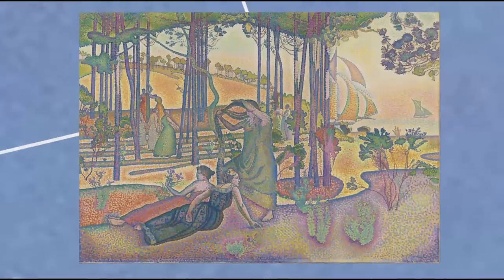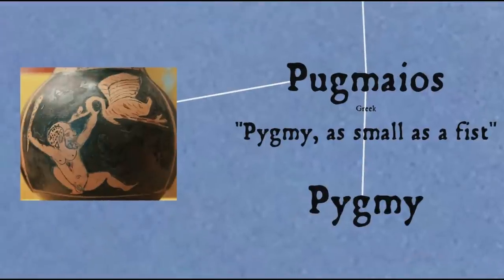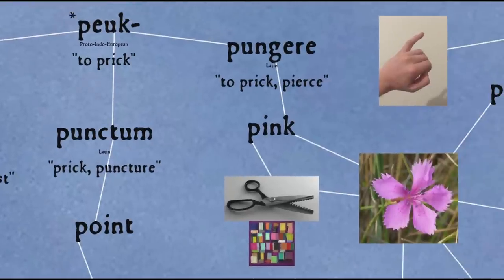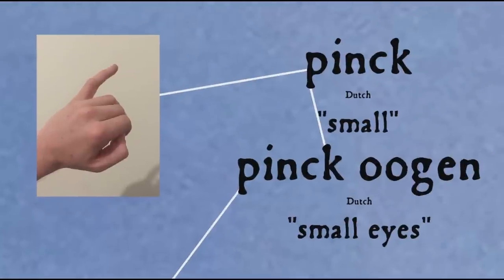Pointillism is the use of small coloured dots to build up an image. The words 'pointillism' and 'point' come from Latin 'punctum', meaning a prick or puncture, ultimately from the Proto-Indo-European root 'peuk', to prick — also the source of the word 'pygmy', who in Greek mythology were a tribe of diminutive people mentioned in Homer's Iliad. It's also the source of the verb 'to pink', now mainly used in the phrase 'pinking shears', which leave a zigzag pattern rather than a straight edge, and this may be the source of the colour term 'pink', since the Dianthus flowers — which have perforated petals and are pink in colour — were also called 'pinks'.